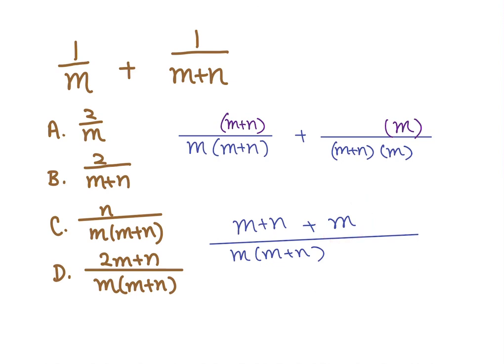So this is 2M plus N over M times M plus N.